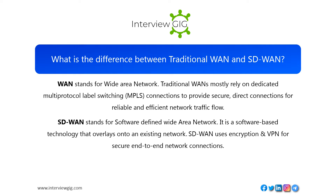What is the difference between traditional WAN and SD-WAN? WAN stands for Wide Area Network. Traditional WANs mostly rely on dedicated multi-protocol label switching (MPLS) connections to provide secure, direct connections for reliable and efficient network traffic flow. SD-WAN stands for Software-Defined Wide Area Network — a software-based technology that overlays onto an existing network.